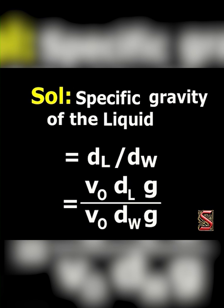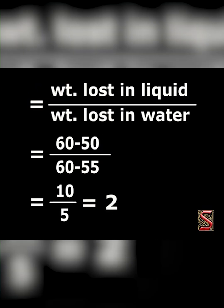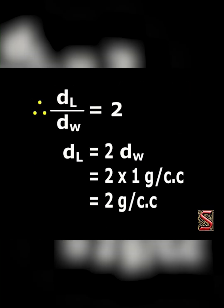Specific gravity of the liquid is equal to density of liquid divided by density of water. Here, (volume of object × density of liquid × g) divided by (volume of object × density of water × g) is equal to weight lost in liquid divided by weight lost in water, which equals 2. Therefore, density of liquid is equal to twice the density of water, that is equal to 2 grams per cc.